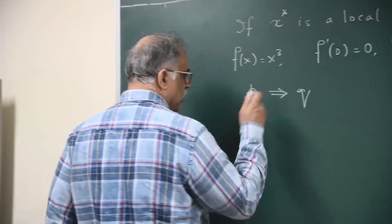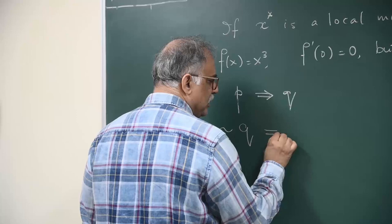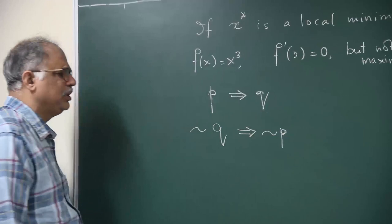So now the negation of the statement is not of q, the opposite of the statement. If p implies q, negation of q, then negation of q implies negation of p. That is the reverse when it comes to negation.